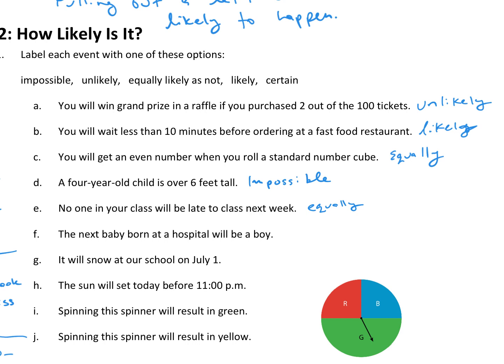It just really depends on the day. The next baby born at a hospital will be a boy. Well, it's either a boy or a girl, so this is also equally. G, it will snow at our school on July 1st. I would say I would accept impossible or unlikely, because, you know, we live in the Midwest.